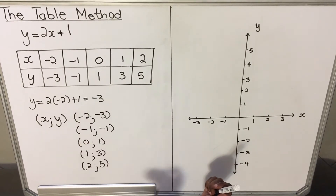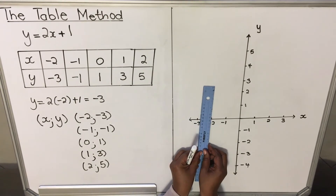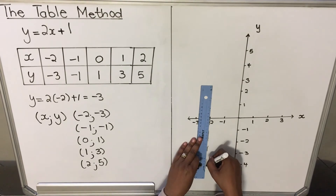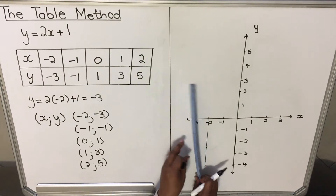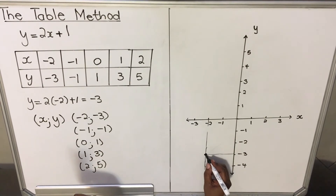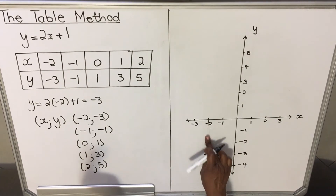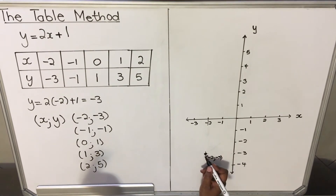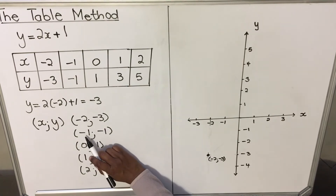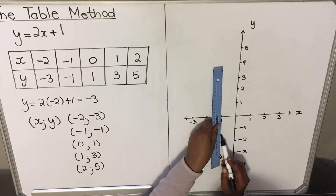Let's take the coordinate (-2, -3). We want to find the point where x = -2 and y = -3 meet. Go to -2 on the x-axis, place your ruler, and draw a slight guide line. Then go to y = -3, draw another slight guide line, and mark the point where the two lines meet. Afterward, erase the guide lines — they're not part of the graph, just to help you find the correct place.